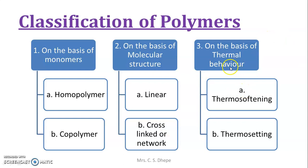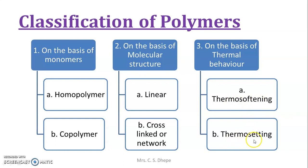In this video we are going to cover classification on the basis of thermal behavior. On the basis of thermal behavior, polymers are of two types: one is thermosoftening polymer and another is thermosetting polymer. Let us proceed for that.